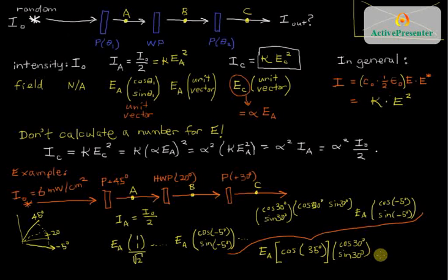So in order to calculate what the intensity is, the intensity at location C, I know it's going to be the input intensity divided by 2. That's what gives me I_A. So it's going to be I naught over 2, which of course is 3 milliwatts per centimeter squared. And then we have to figure out what this decrease factor is.